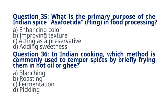Question 36. In Indian cooking, which method is commonly used to temper spices by briefly frying them in hot oil or ghee? A. Blanching. B. Roasting. C. Fermentation. D. Pickling. The correct answer to question 36 is option B. Roasting. Explanation. Roasting, or tadka, is a common technique in Indian cooking to release and enhance the flavors of spices before incorporating them into dishes.